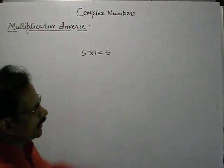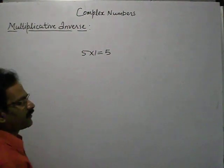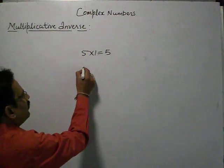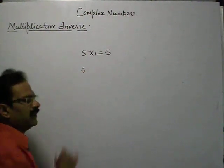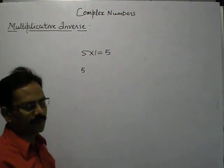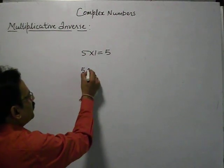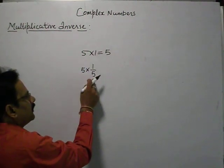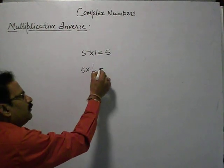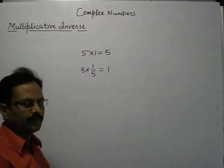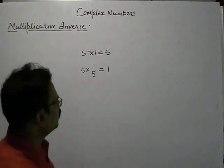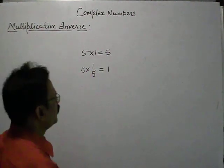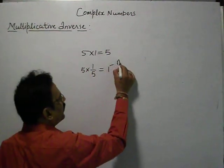If we have to find out the multiplicative inverse of any number — say if there is 5 and we have to find the multiplicative inverse of 5 — if we multiply a number with another number, we should get the multiplicative identity which is 1. If we multiply 5 with 1/5, we will get 1. So, 1 is the multiplicative identity.